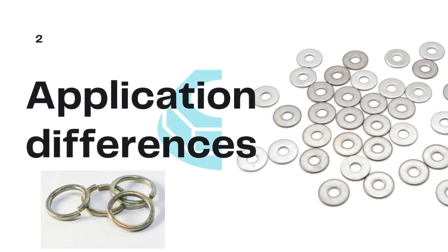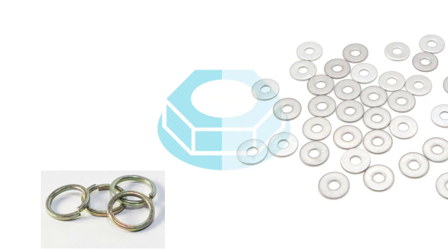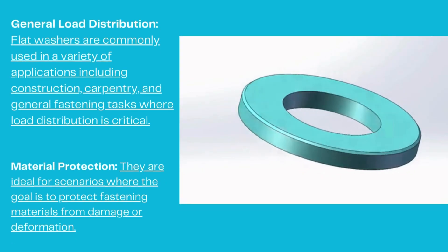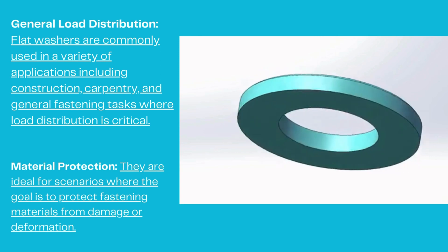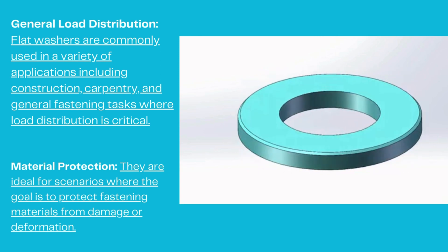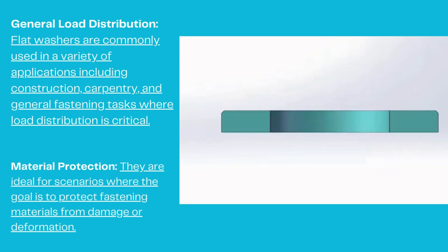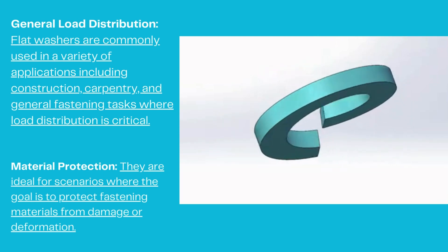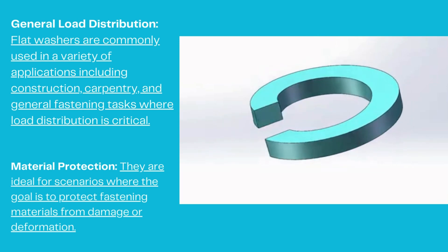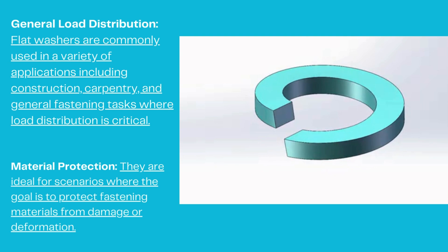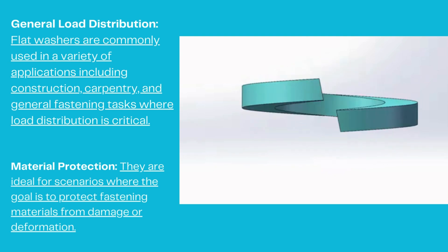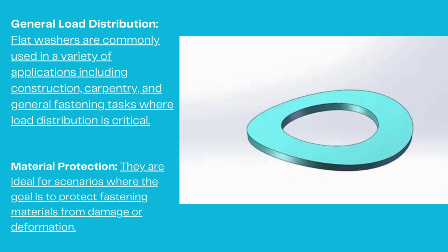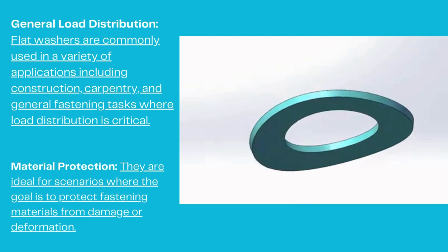Application differences. Flat washers. General load distribution: flat washers are commonly used in a variety of applications including construction, carpentry, and general fastening tasks where load distribution is critical. Material protection: they are ideal for scenarios where the goal is to protect fastening materials from damage or deformation.